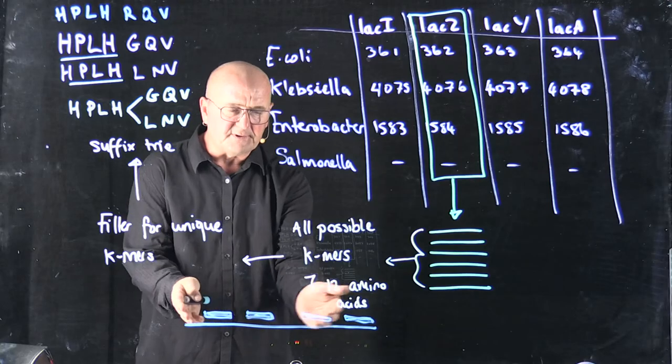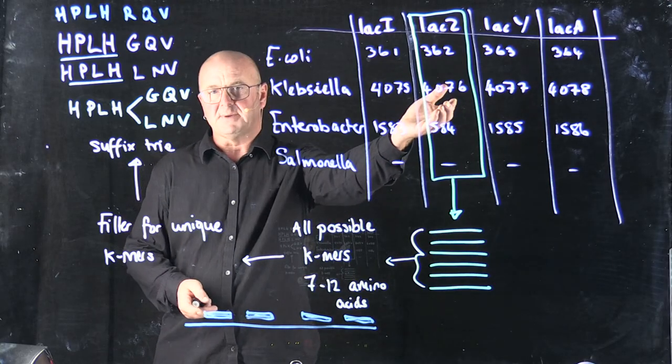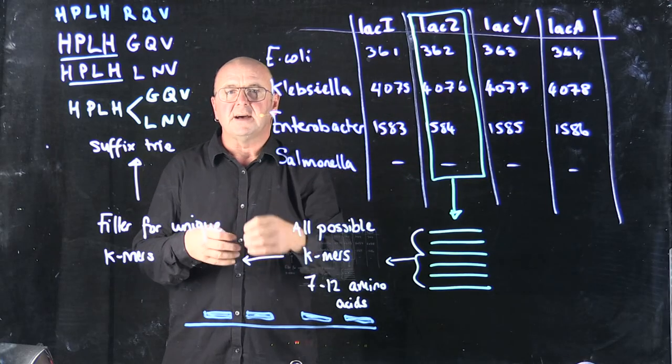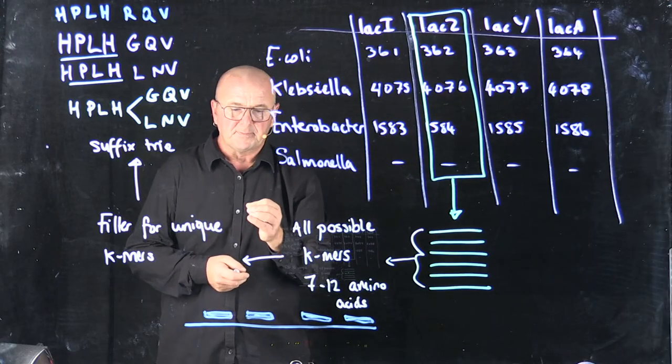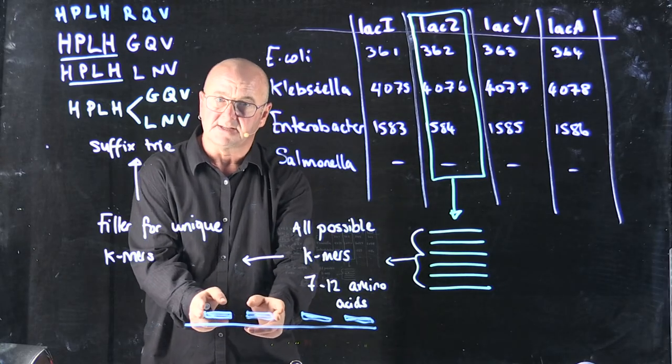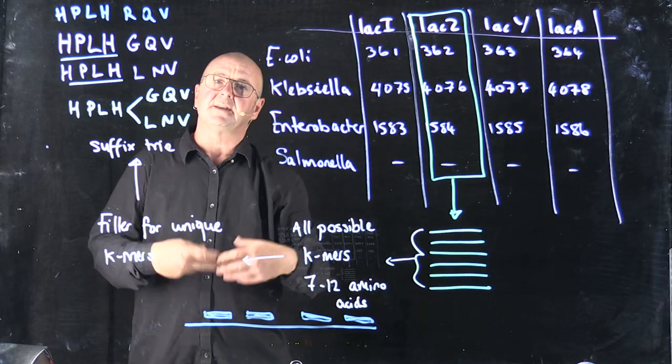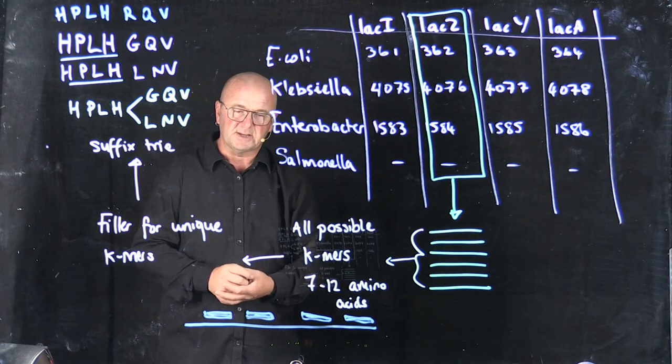If we have four or six or 20 7-mers that actually match beta-galactosidase, the more we have, the more confident we are. We also constrain this a little bit so that they have to be within a certain distance because you don't want to have one sequence that matches the beginning and one that matches the end and then call that a match.